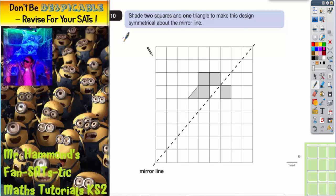Question 10 is all about symmetry. It says, shade two squares and one triangle to make this design symmetrical about the mirror line. Key word there is mirror.